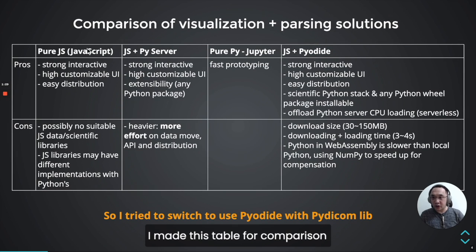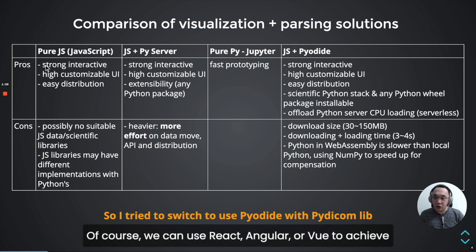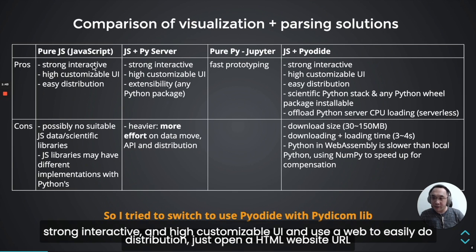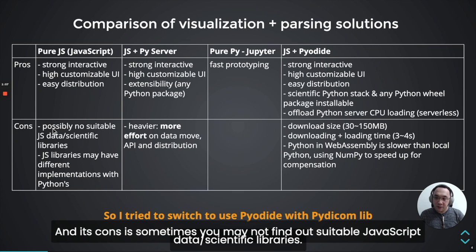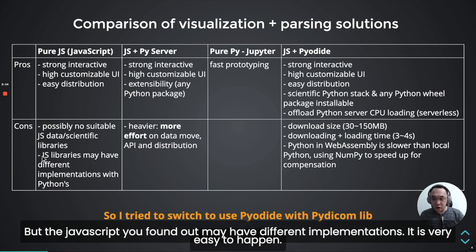I made this comparison table. The first column is pure JavaScript. You can use Vue or Angular to achieve strong integrity and highly customized UI, and use the web for easy distribution — just open the HTML website URL. The downside is sometimes you may not find a suitable JavaScript data or scientific library, or your organization needs to cooperate with a data science team that uses Python, and the JavaScript library may have different implementations.